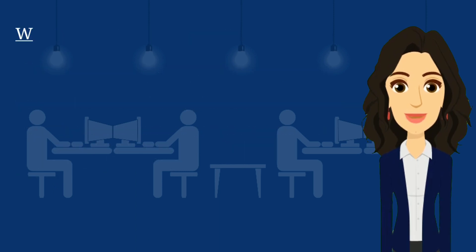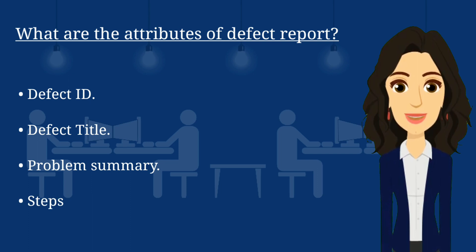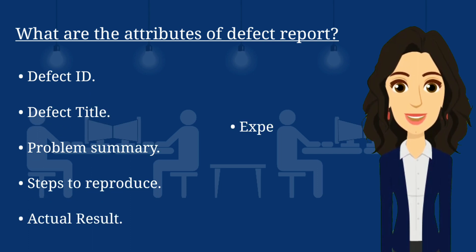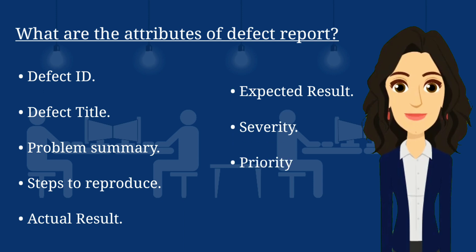The next question is: what are the attributes of a defect report? Give all the attribute names that you know. The attributes of a defect report are: Defect ID, Defect Title, Problem Summary, Steps to Reproduce, Actual Result, Expected Result, Severity, Priority, and Attachment.